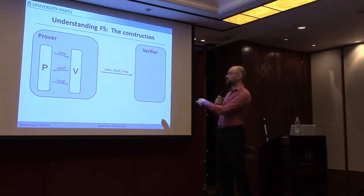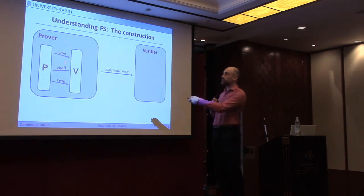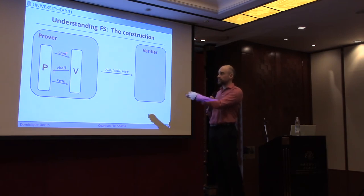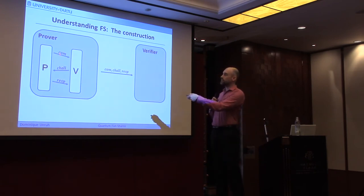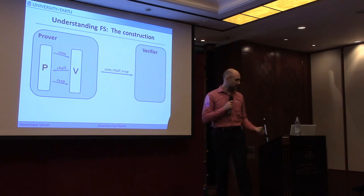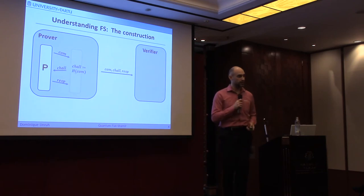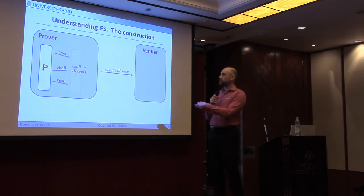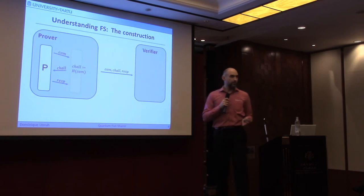The verifier who checks whether this is a valid interaction cannot be sure whether the internal verifier actually sent a uniformly random challenge. So it is actually very easy for the Fiat-Shamir prover to make a valid interaction for an invalid statement by just picking a challenge for which it can finish the proof. What we can do to enforce that the challenge is actually random is to take a hash function — instead of choosing the challenge randomly, we take the commitment, hash it, and this will be the challenge.